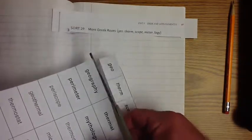Looks like we're doing sort 29, more Greek roots. Looks like we've got geo, which we've talked about before because that's part of our science. We also are doing therm, scope, meter which is part of math, and logy.